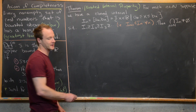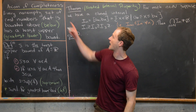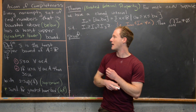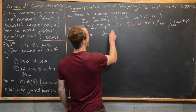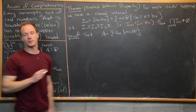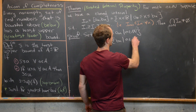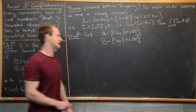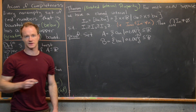Now let's look at the proof of the nested interval theorem. We want to produce two sets, one to apply the axiom of completeness for boundedness above and one for boundedness below. Let A equal {A_N : N ∈ ℕ} — the left-hand endpoints — and B equal {B_N : N ∈ ℕ} — the right-hand endpoints. Both are subsets of ℝ.